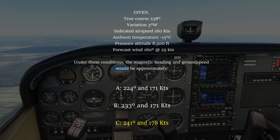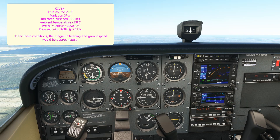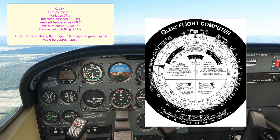The E6B is coming back out. The first thing we have to do is calculate the true airspeed using this side of the flight computer. Ideally we'd be given a calibrated airspeed to work with here, but we've been given an indicated airspeed so we'll have to make do with that. You'll see here we have two windows: one for altitude computations, and the other for true airspeed and density altitude computations. We'll use the true airspeed and density altitude window.